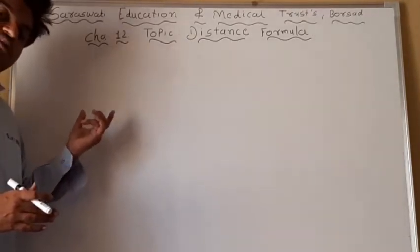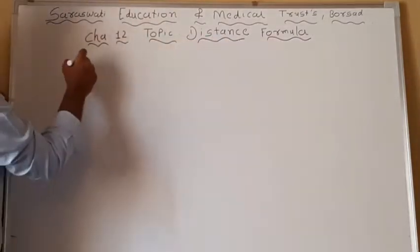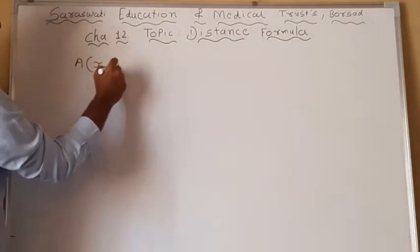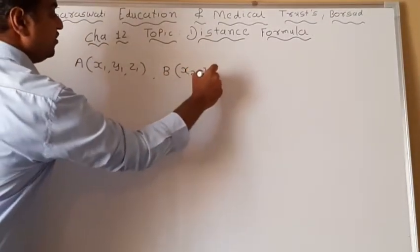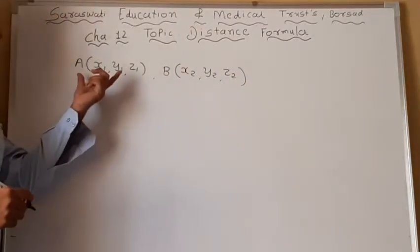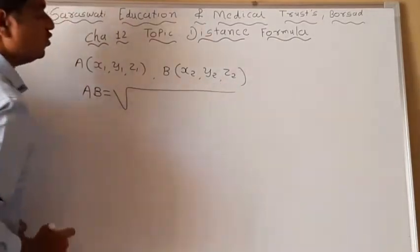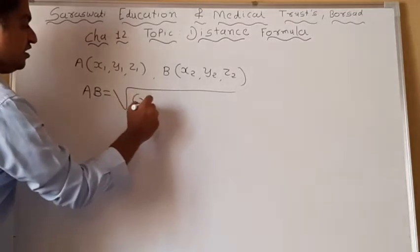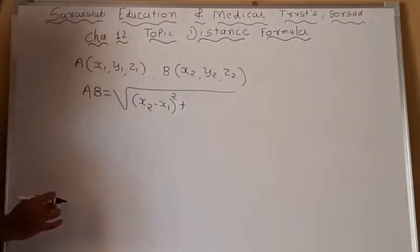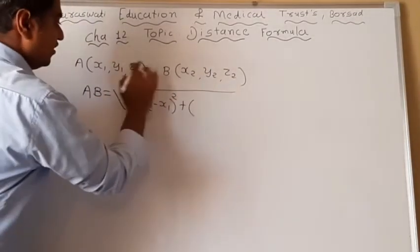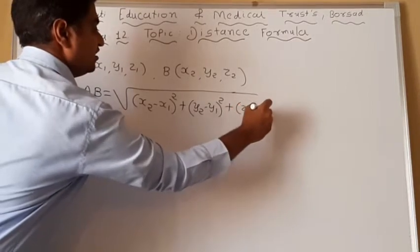So here the formula is the same, but with three coordinates. Today our topic is the distance formula. Suppose point A has coordinates X1, Y1, Z1 and point B has coordinates X2, Y2, Z2. Now AB is equal to under root of: X2 minus X1 whole square — we can also write X1 minus X2 because it is in whole square form, so the answer won't change — plus Y2 minus Y1 whole square, plus Z2 minus Z1 whole square.